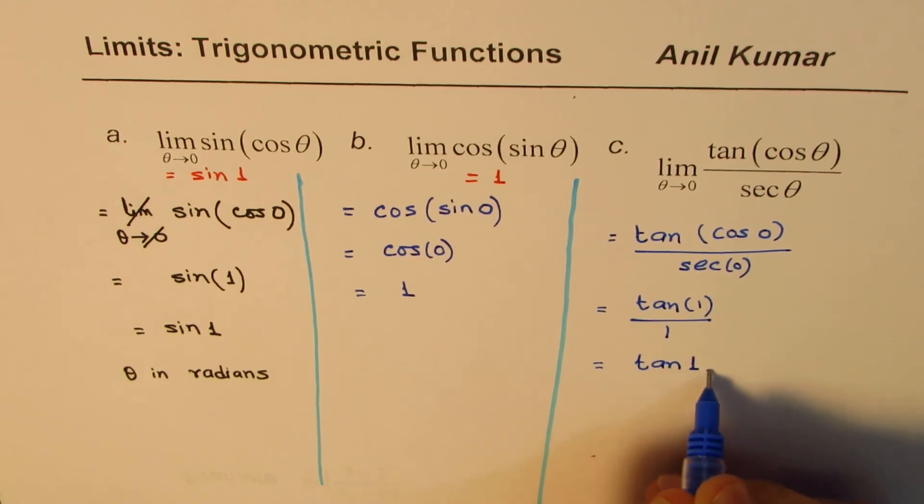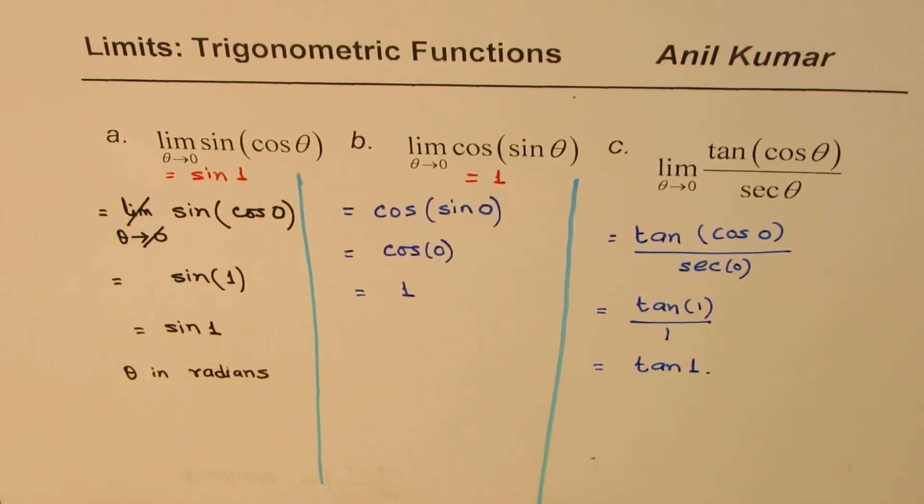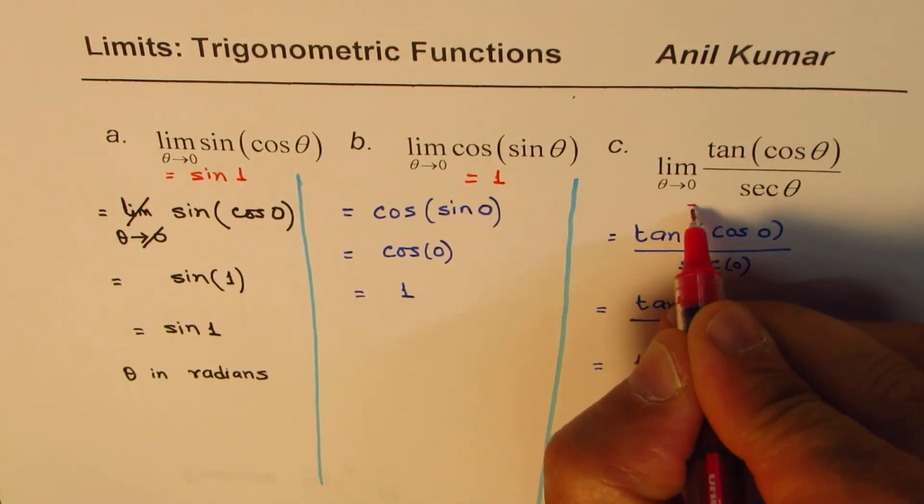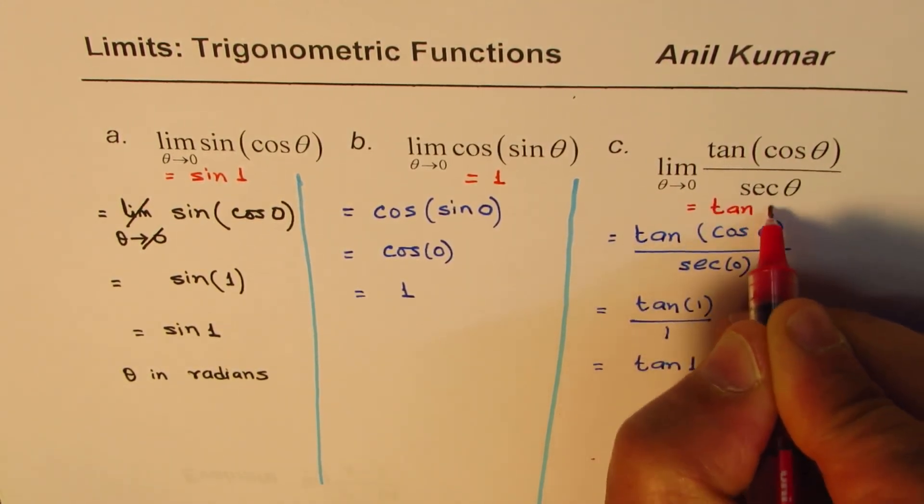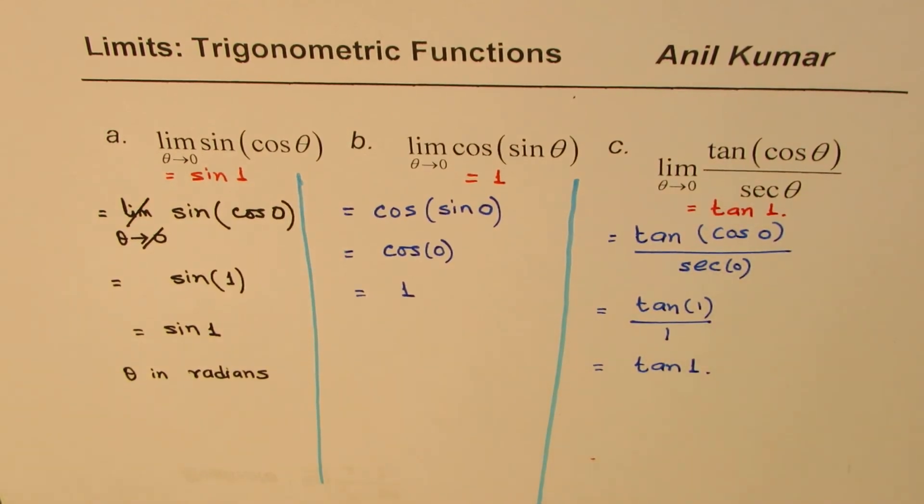So tan 1 is the answer for part C. This limit is equal to tan 1. That is how you can find limit of these functions using direct substitution.